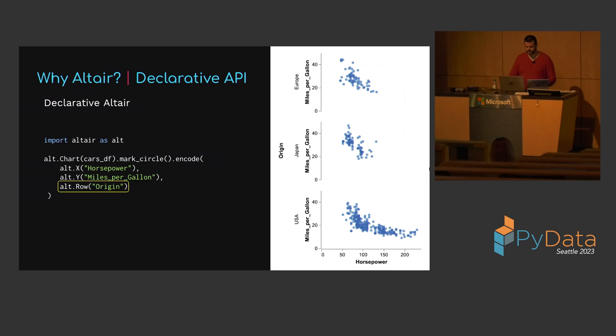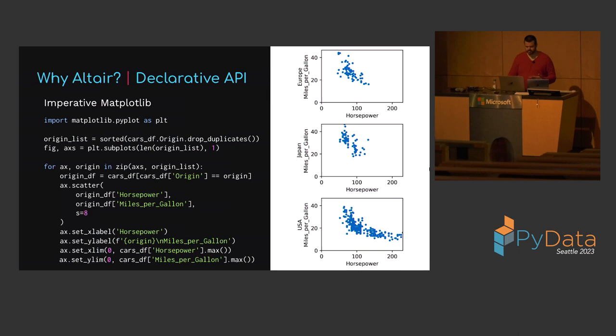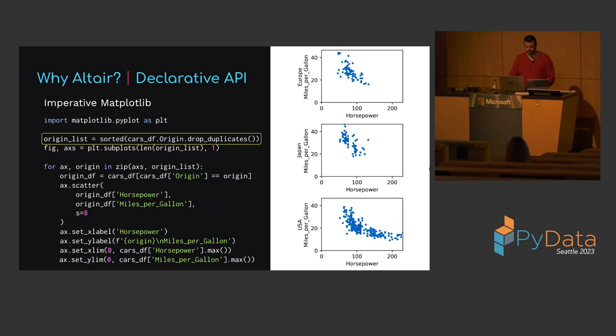Now let's contrast this declarative implementation with an imperative specification in matplotlib. In an imperative visualization API like matplotlib, you specify the individual steps required to build up the chart. This yields more control oftentimes, but it's up to the visualization author to ensure that the steps you choose result in a chart that matches the intended requirements. First, import pyplot. Before anything else, we need to compute the set of unique origin values so we know how many subplots we're going to need.